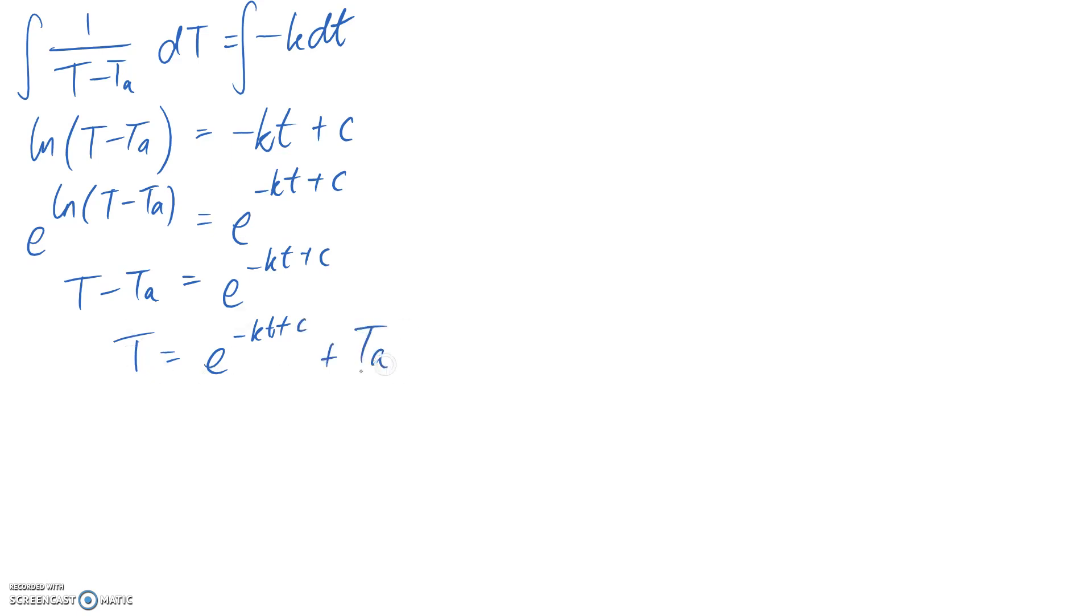Now, this is a valid general solution. However, I can make it a little bit nicer by getting the c constant out of being in the power. So how I can do that is separating, so that I express this as e to the negative kt multiplied by e to the c. This comes from the power rule.